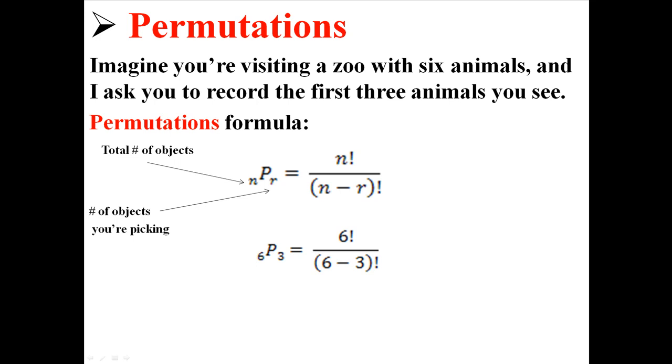Like in this case, we're dealing with six different animals, and we're picking three of them. So I just put six as n where there's an n in the formula, and I put in three where there's an r in the formula.